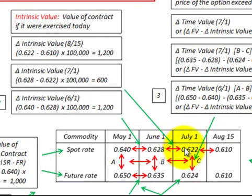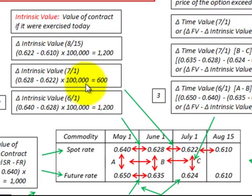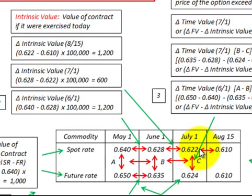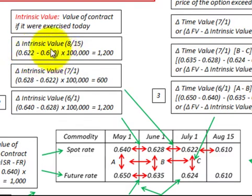Looking at our next period of July 1st, we had a spot rate of 0.622 compared to the previous month's spot rate of 0.628. Again we had a reduction in prices, so we had a gain in intrinsic value of $600. For our last period of August 15th, the spot rate of 0.610 compared to July 1st's 0.622, and again we had a reduction in prices. The difference between 0.622 and 0.610 gave us a gain in intrinsic value of $1,200.